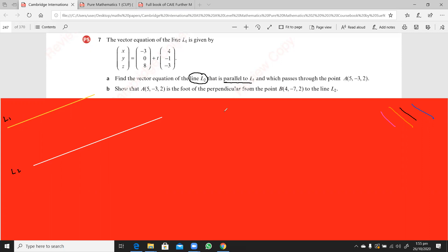then I can easily say that its equation is going to be R is equal to, it is passing through the point A, so this is 5, minus 3, 2, and then plus, we can write here mu this time,